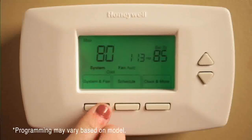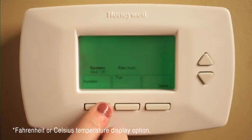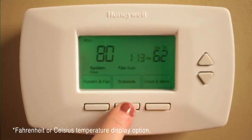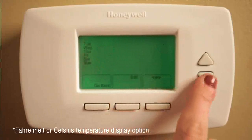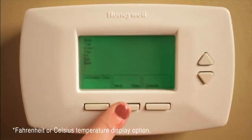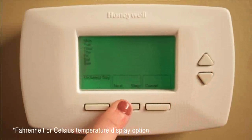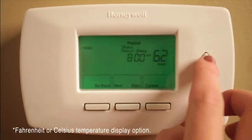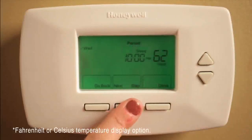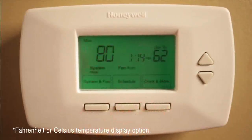To set the system, press system to select the mode. Choose from heat, cool, auto or off. Enter times and specific temperatures. After you've chosen the mode, press done.